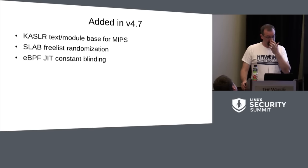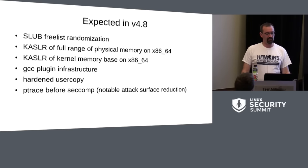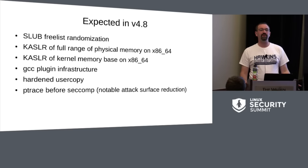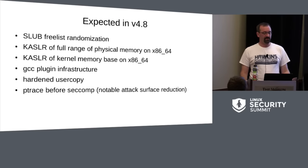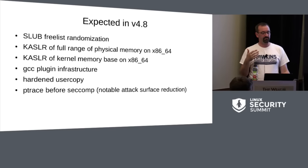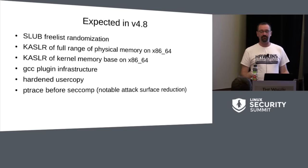In 4.7: KASLR for MIPS, slab free list randomization, and JIT constant blinding landed. In 4.8: slab free list randomization, KASLR on x86 expanded to cover the entire physical memory range instead of just the first couple of gigs, work started on randomizing various memory bases in the kernel on x86, and the GCC plugin infrastructure finally made its way in. With a couple of example plugins, it's now trivially possible to add GCC plugins — you can pluck them out of PAX and GRsecurity and run them on a mainline kernel, though many also need annotations from the kernel.